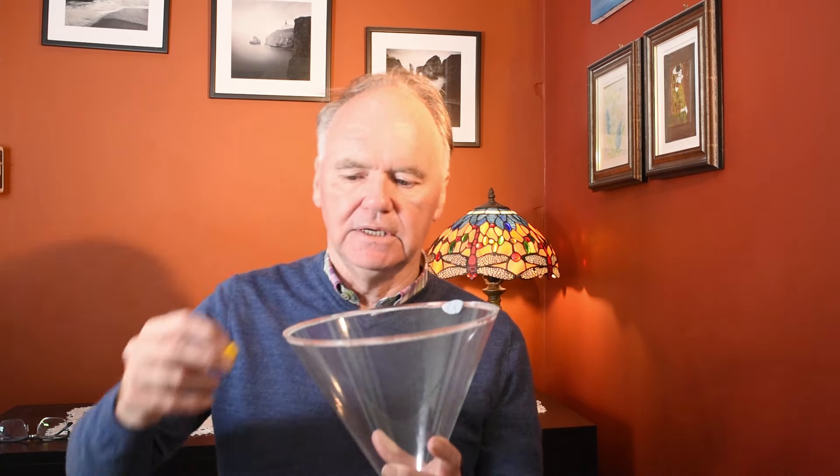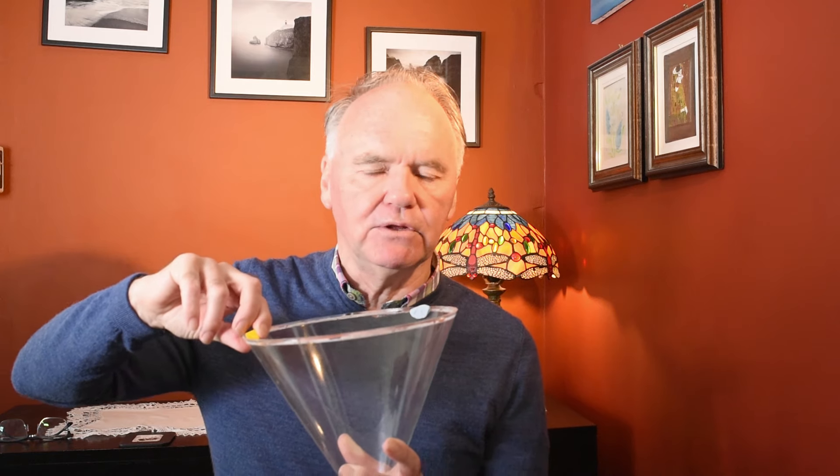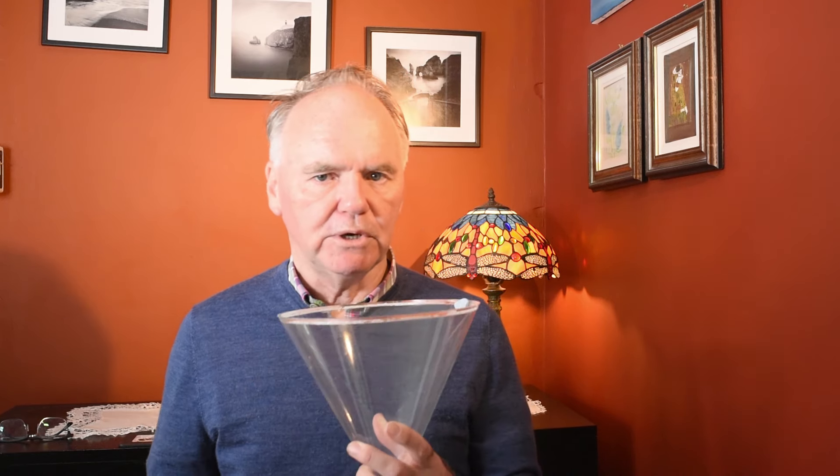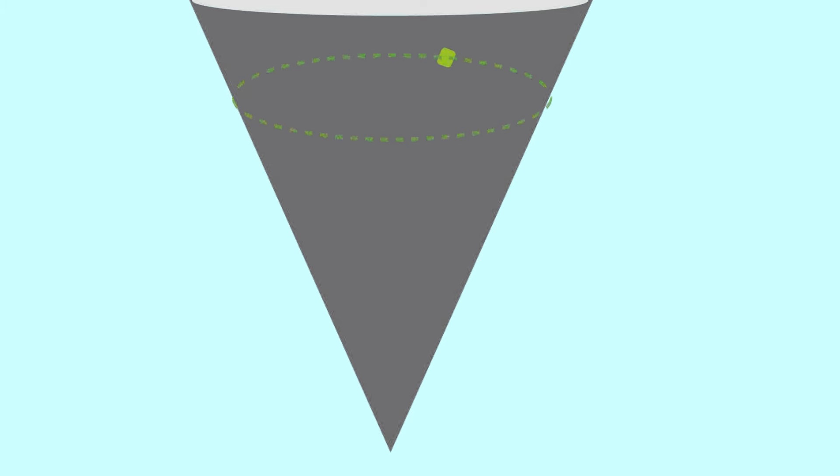The question we're going to ask then: what must the minimum period of the cone be to prevent the block popping out, and what must the maximum period of the cone be to prevent the block sliding down? Remember, the maximum period will correspond to the slowest rotational speed, and the minimum period will correspond to the maximum rotational speed. So our question is, what are those relevant periods — what does the maximum period have to be to prevent it sliding down, and what will the minimum period be to prevent it sliding up? Remember, a period is the time it takes to make one revolution.